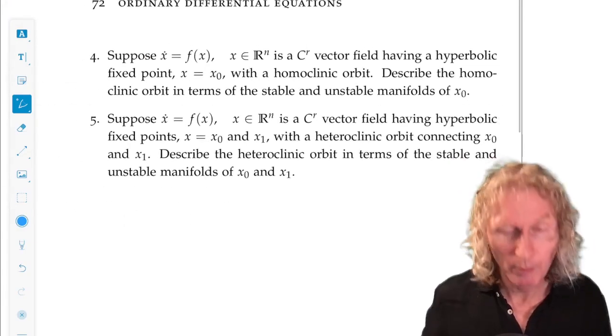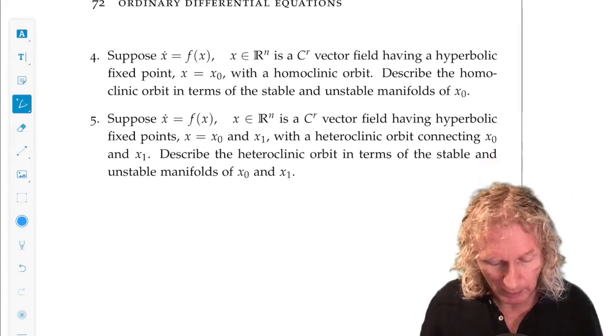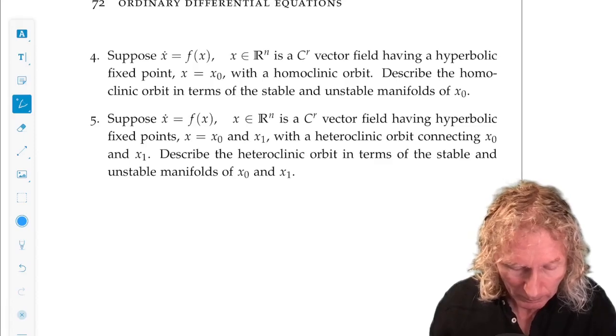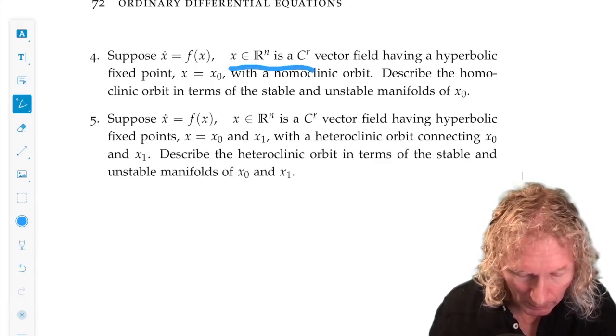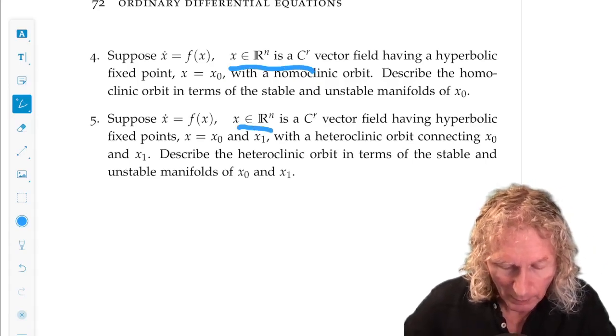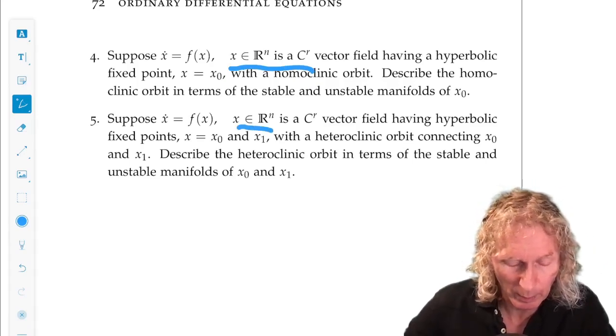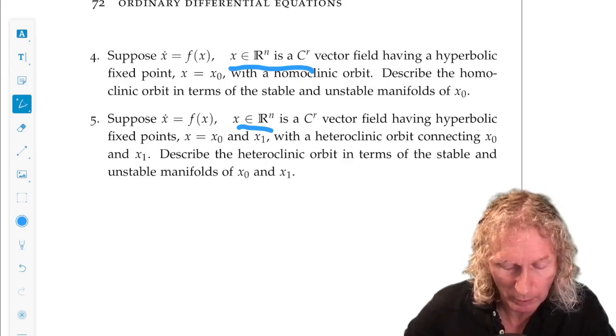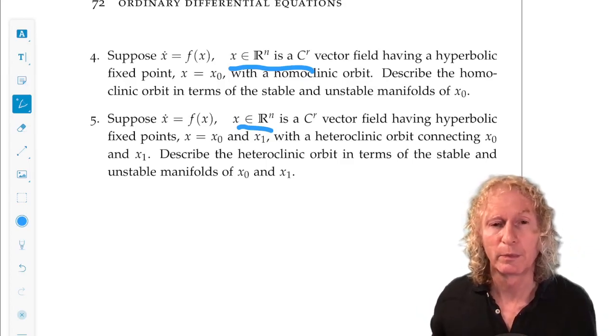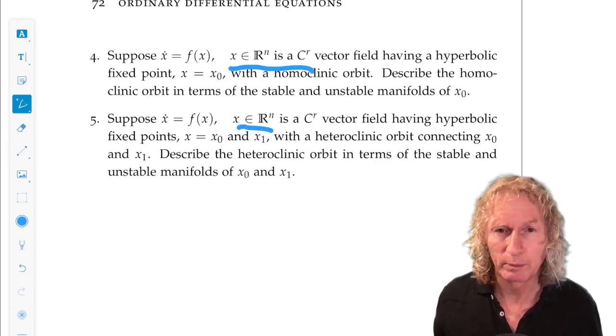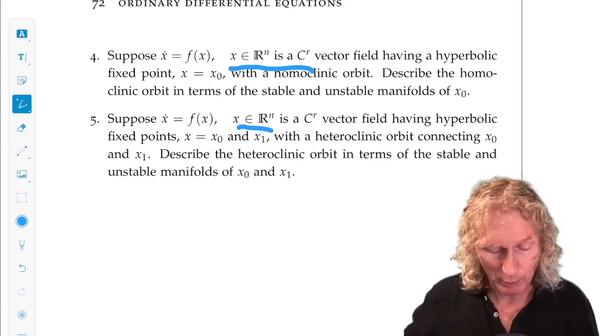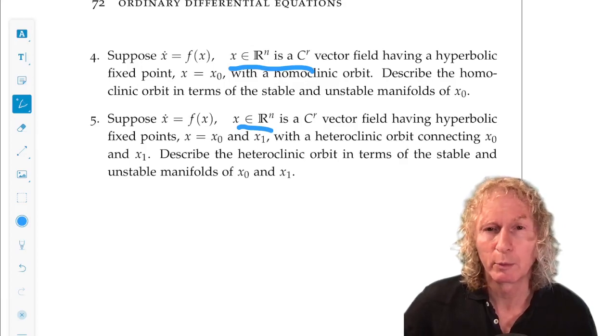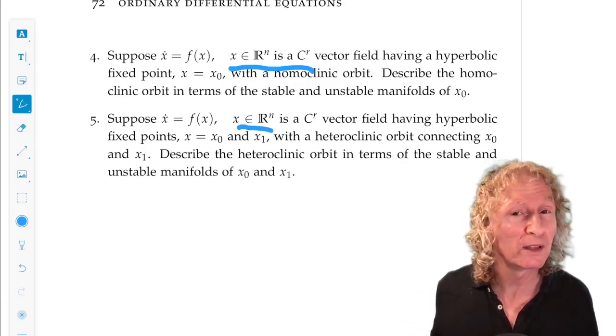Okay. Let's go back to homoclinic and heteroclinic orbits. These. This is true in R^n. Both of these. We have an autonomous vector field with a hyperbolic equilibrium point in the homoclinic orbit. So, there is an orbit that under forward time evolution approaches that fixed point, equilibrium point. So, it must be in the stable manifold.